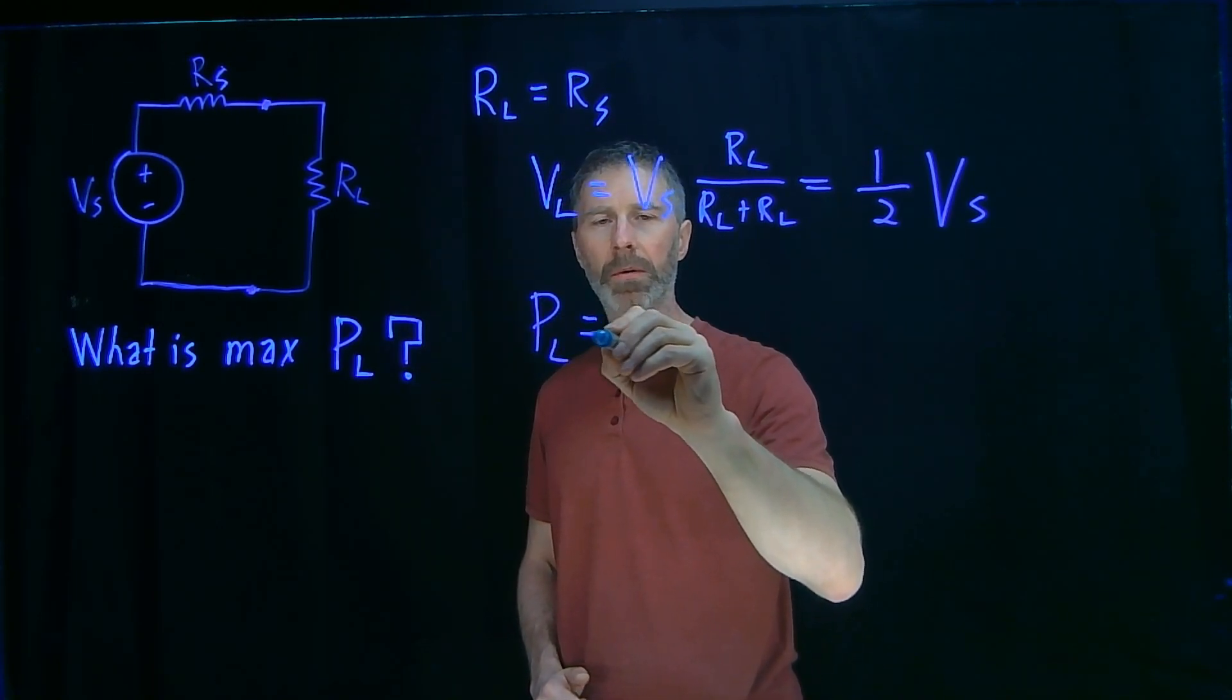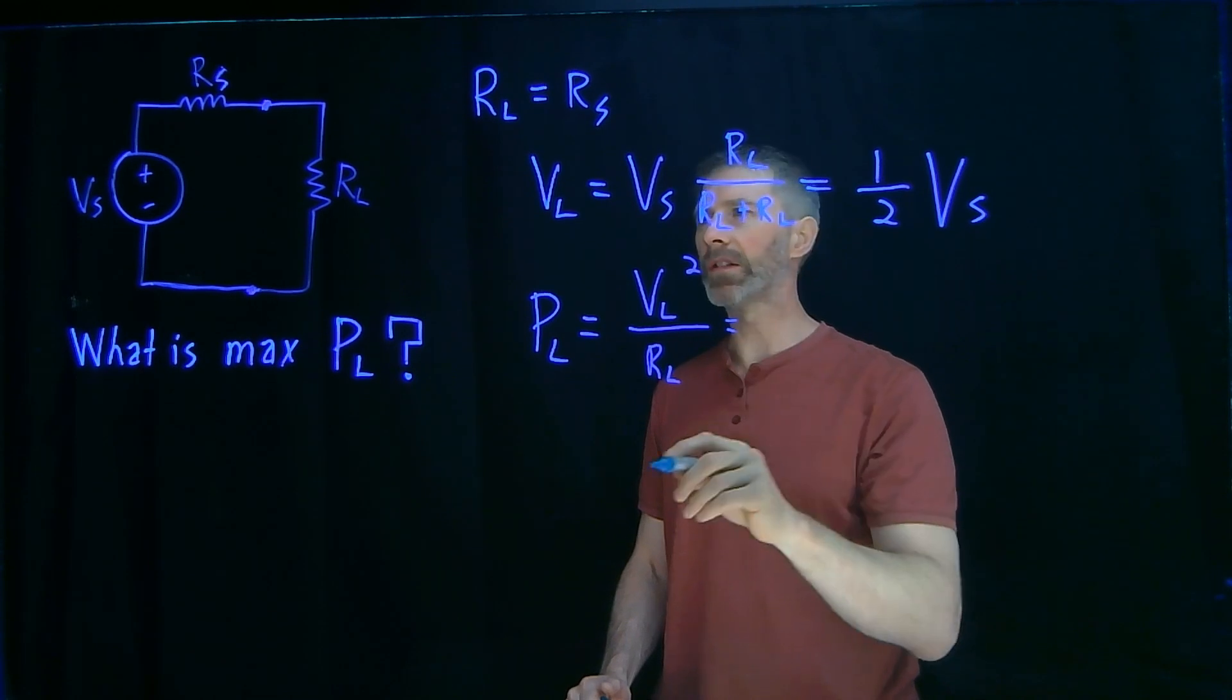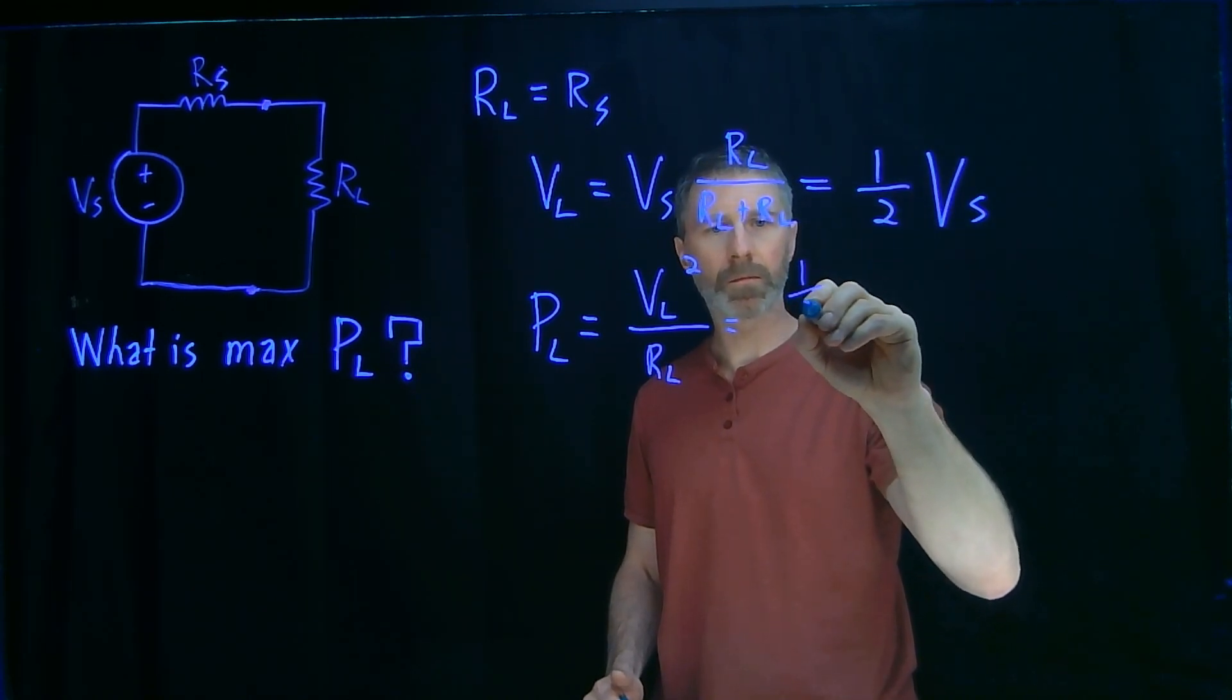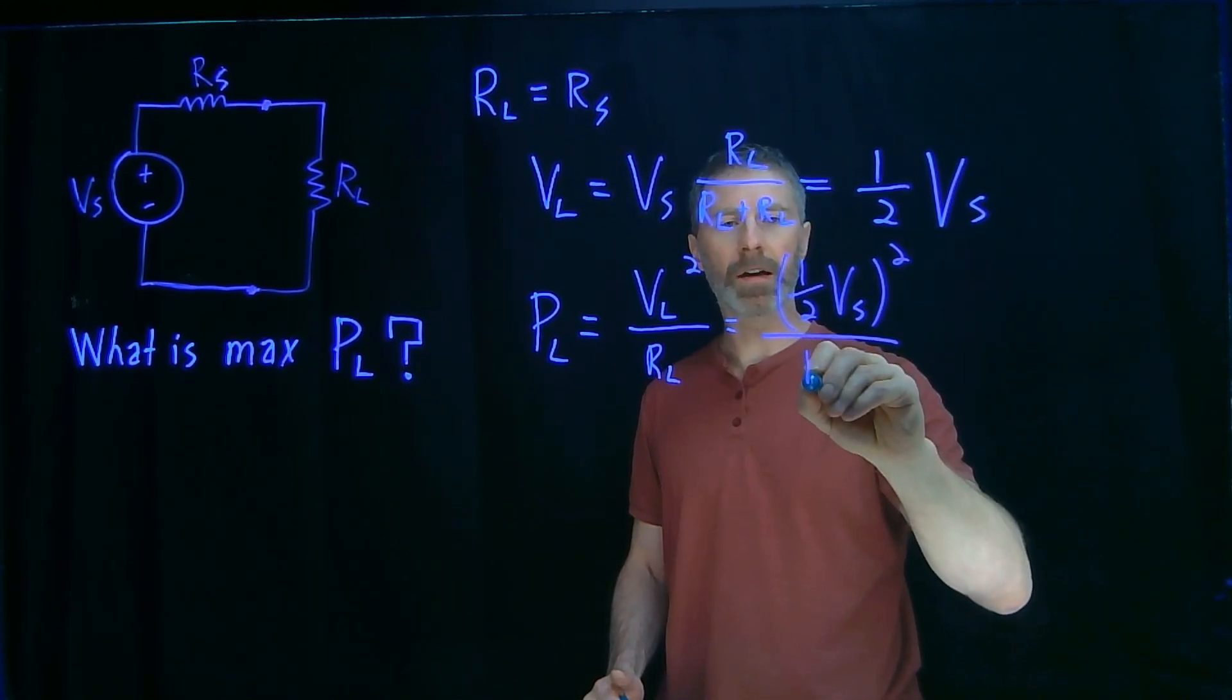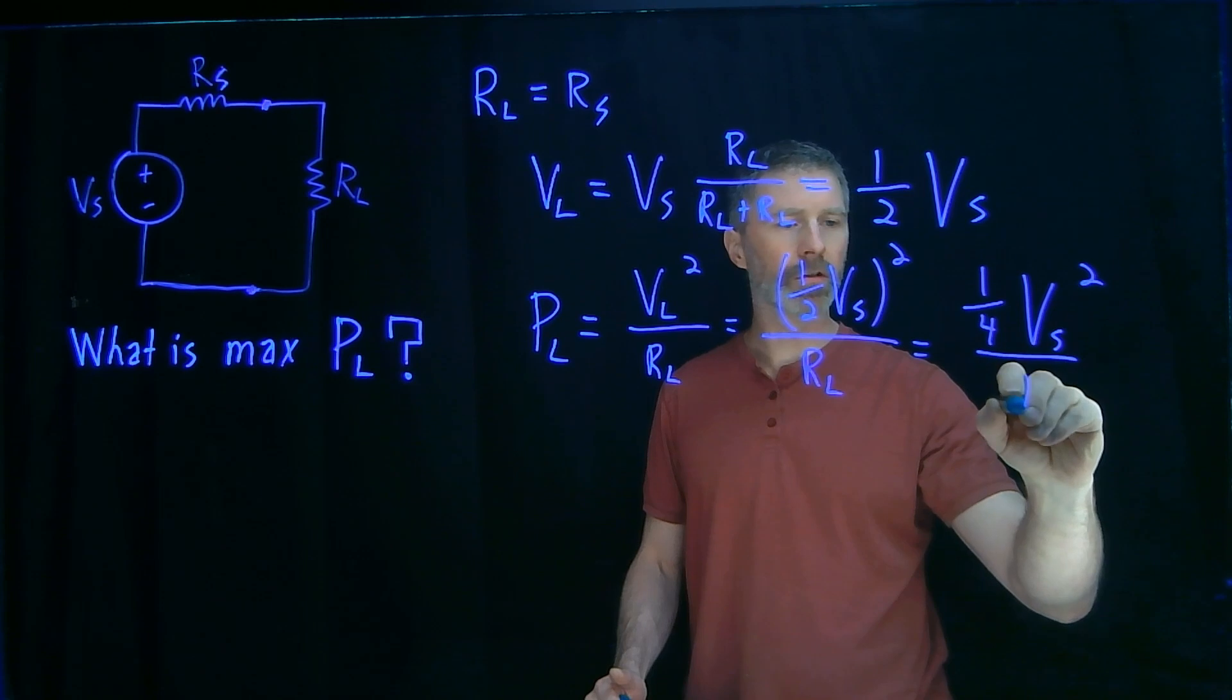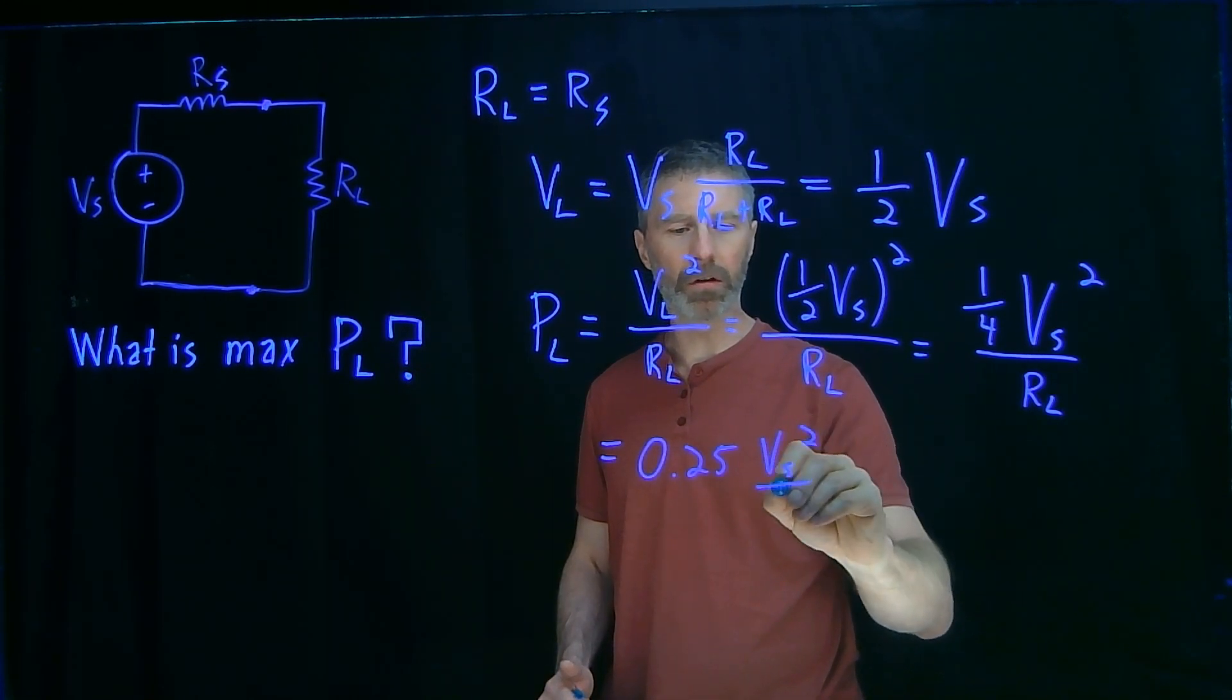Now we can go and look at the power to the load, which is equal to VL squared over RL. And we want to put this in terms of VS and RS, VS, RS, and RL. So VL squared is simply one-half of VS, all squared. And we divide that by RL, and that gives us one-quarter VS squared over RL. Or if we wrote it out in decimal form, 0.25 VS squared over RL.